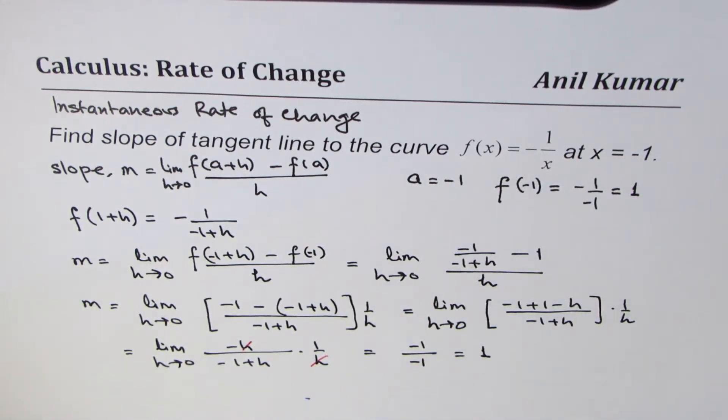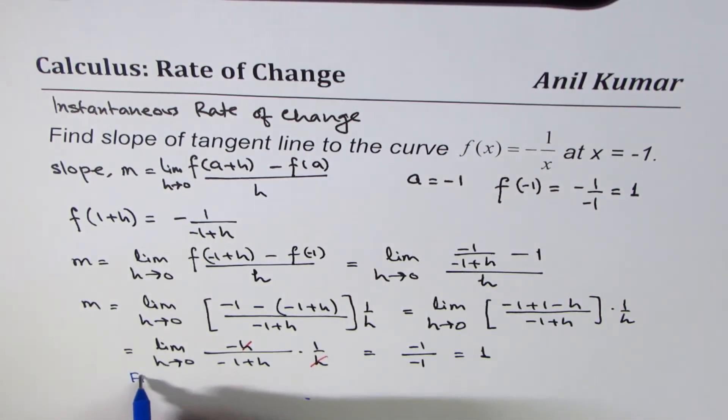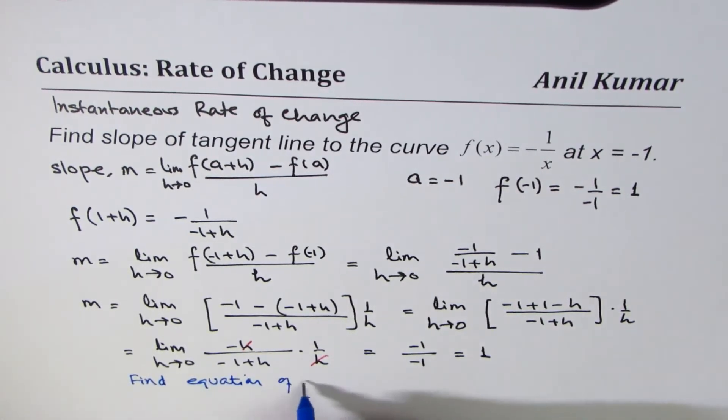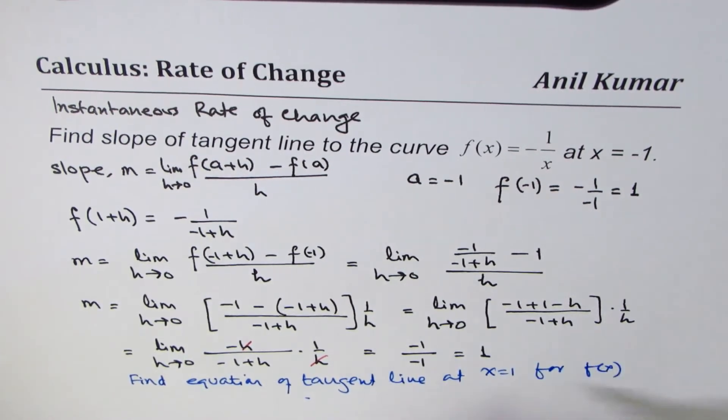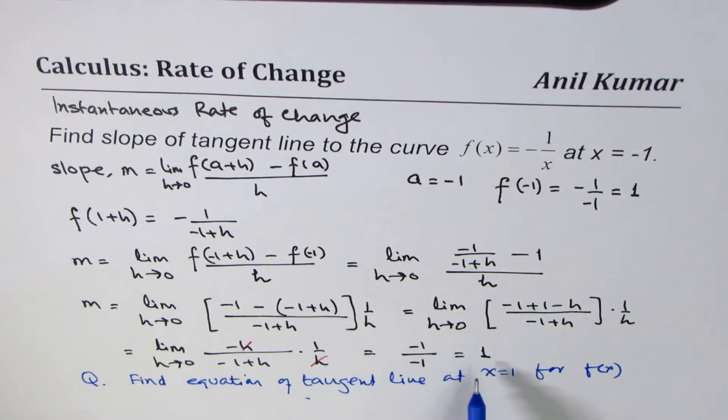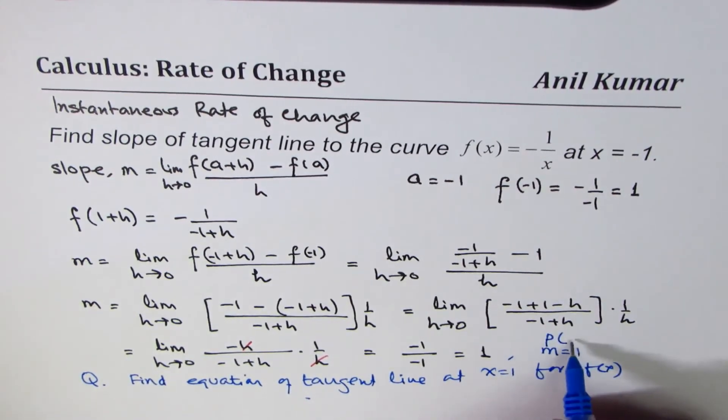So that becomes the slope. So now as an exercise, what you can do is, you can find equation of tangent line at x equals to minus 1 for f(x). So to find equation of the tangent line, you know the slope. Now we know slope m equals to 1. We know the point p is (-1, 1). And you can use the equation of line y equals mx plus b and find the value of b.